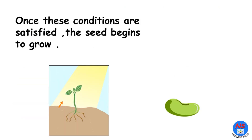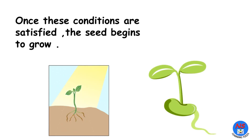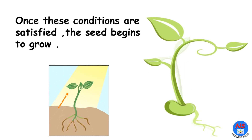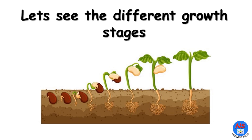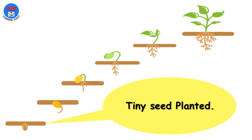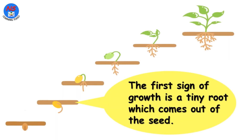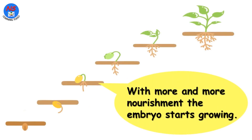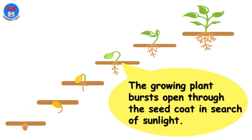Once these conditions are satisfied, the seed begins to grow. Let's see the different growth stages. A tiny seed is planted. The first sign of growth is a tiny root, which comes out of the seed. With more and more nourishment, the embryo starts growing. The growing plant bursts out through the seed coat in search of sunlight.